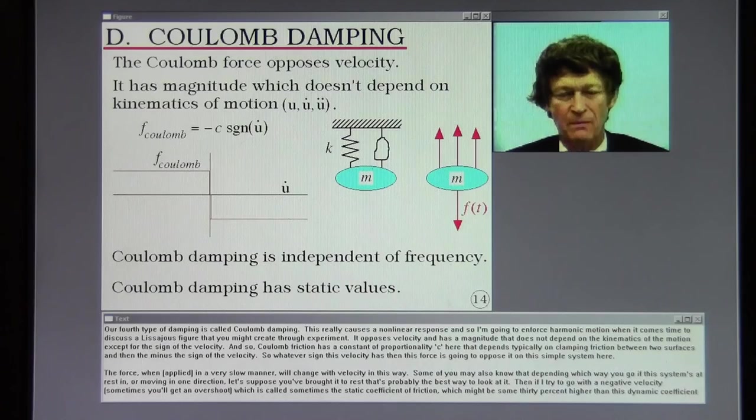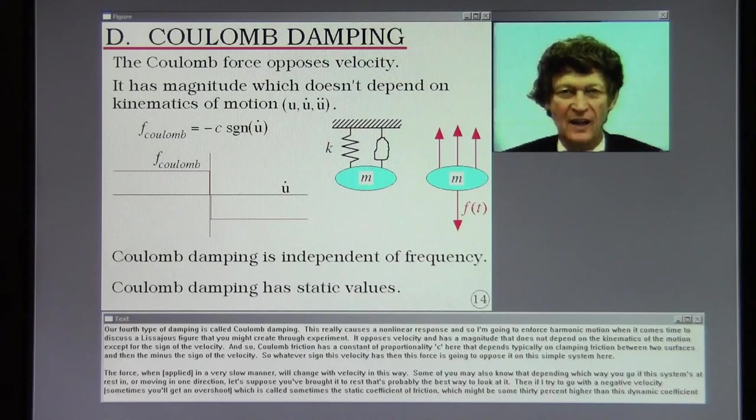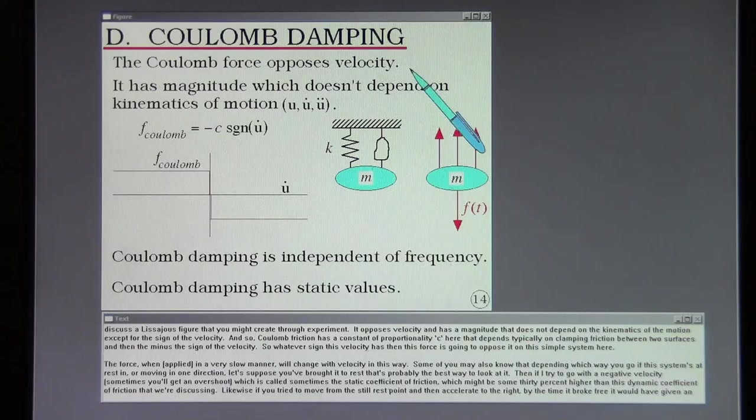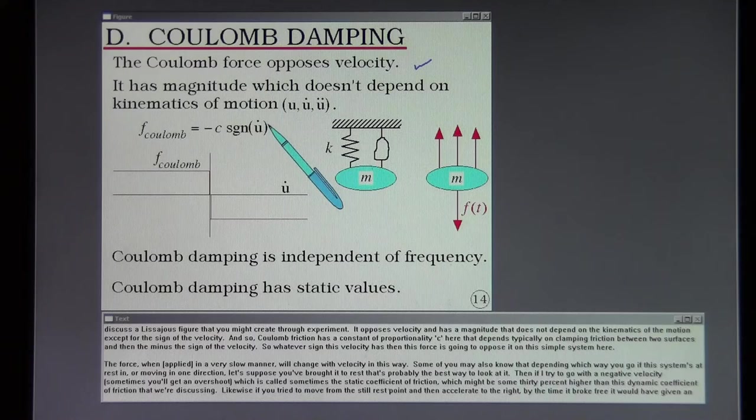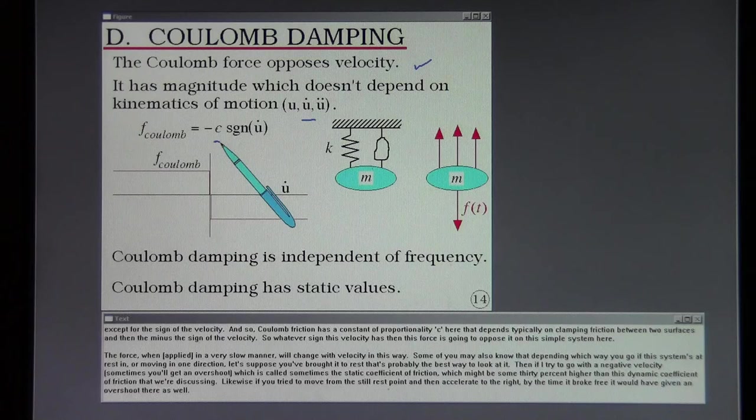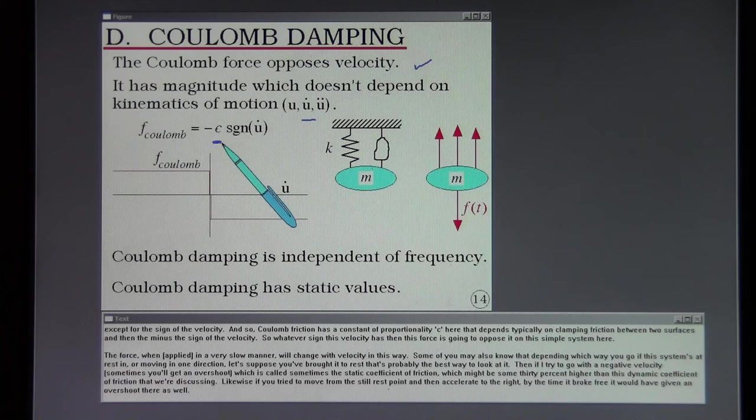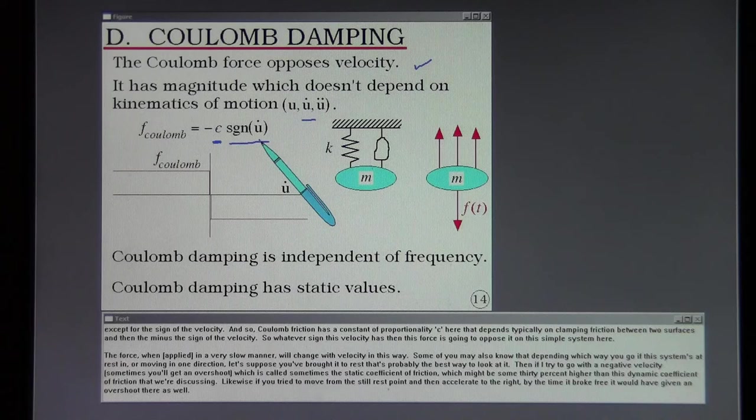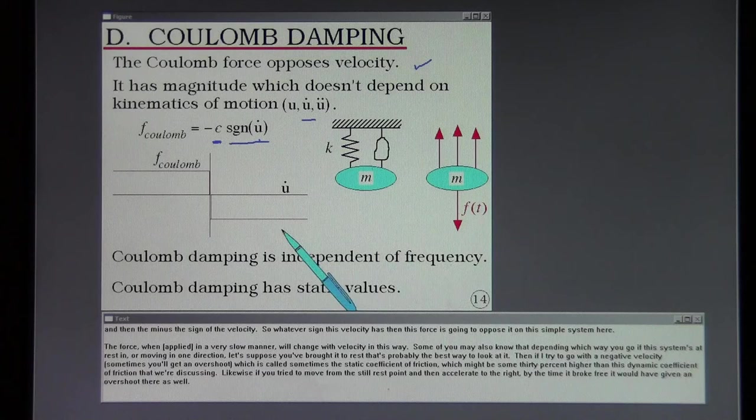Our fourth type of damping is called Coulomb damping. This really causes a non-linear response and so I'm going to enforce harmonic motion when it comes time to discuss a Lissajou figure that you might create through experiment. It opposes velocity and has a magnitude that does not depend on the kinematics of the motion except for the sign of the velocity. And so Coulomb friction has a constant of proportionality c here that depends typically on clamping friction between two surfaces and then the minus the sign of the velocity. So whatever sign the velocity has then this force is going to oppose it on this simple system here.